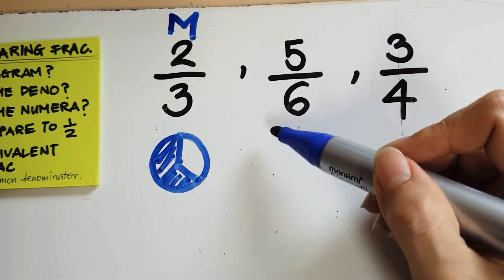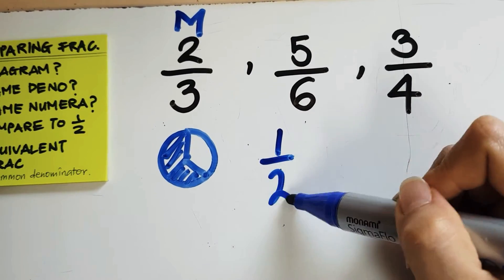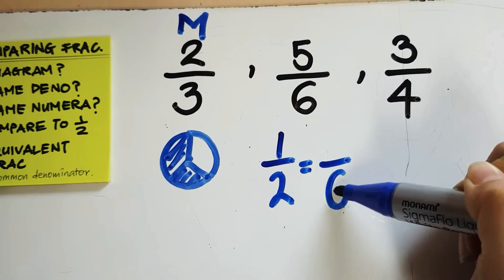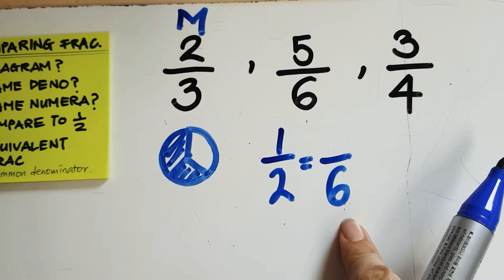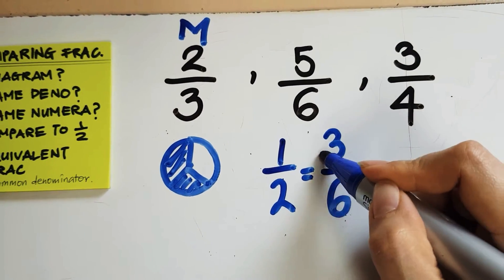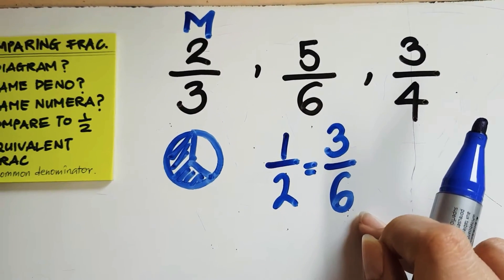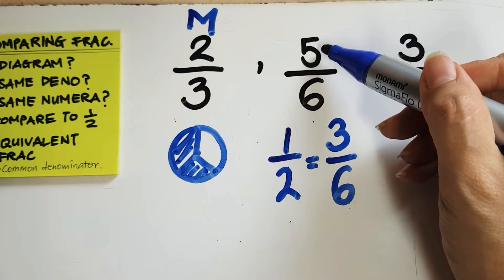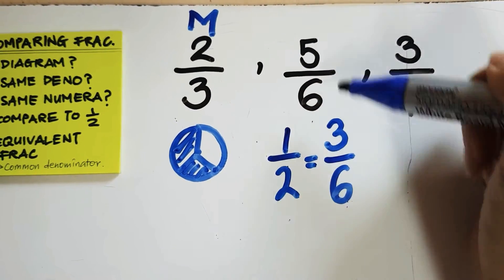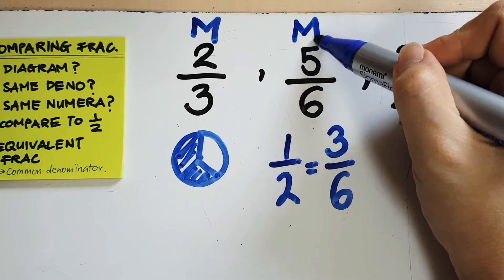Now, let's look at 5/6. If I want half, and if I have six pieces, what would be equivalent to half? If I have six pieces, I would need 3/6 for it to be equal to half. And 5/6 would be more than 3/6, so this is also more than half.